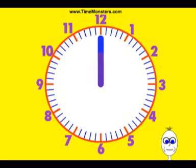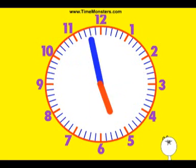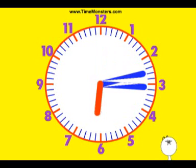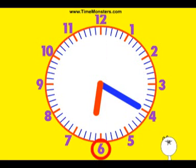We say 20 past when the minute hand is pointing here, 20 minutes after the hour. So if this is 6 o'clock, 20 past 6 is here, when the hour hand has passed 6 and the minute hand is pointing here, to 20 past. So this is 20 past 6.